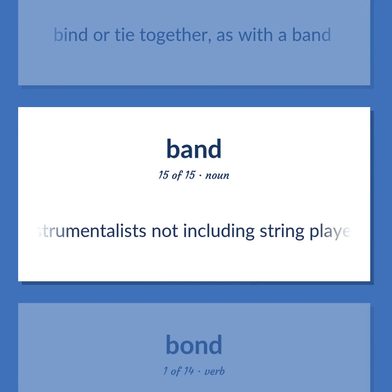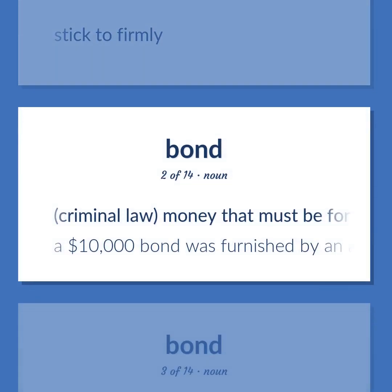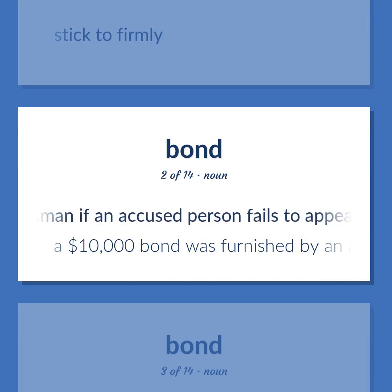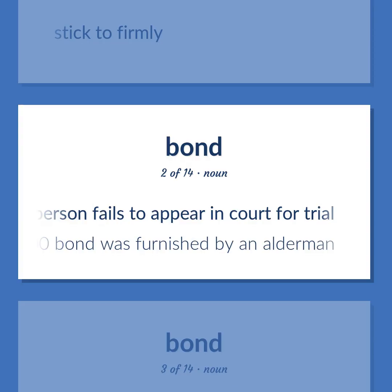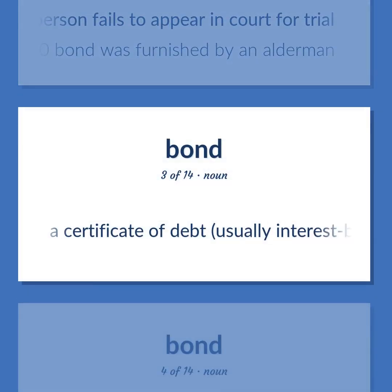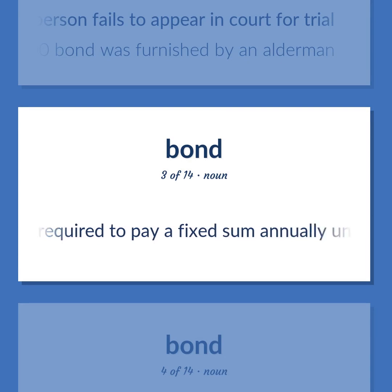Band: Instrumentalists not including string players. Bond: Stick to firmly. Criminal law — money that must be forfeited by the bondsman if an accused person fails to appear in court for trial — a $10,000 bond was furnished by an alderman. A certificate of debt, usually interest-bearing or discounted, that is issued by a government or corporation in order to raise money; the issuer is required to pay a fixed sum annually until maturity and then a fixed sum to repay the principal.